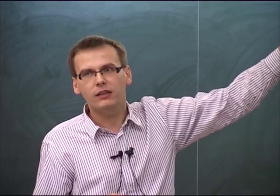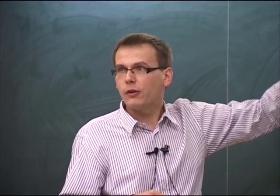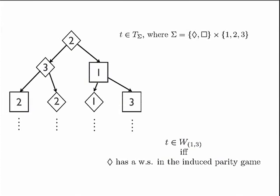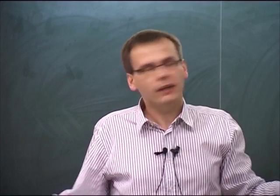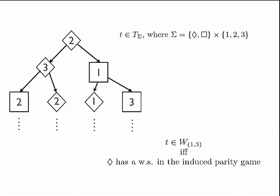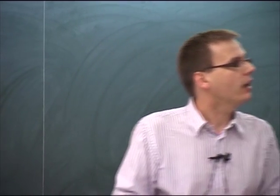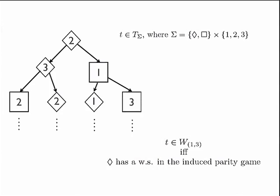On such a tree you can play the same game as in the automaton semantics: players start at the root; if it's a Diamond node, Diamond makes the choice of going left or right; if it's a Box node, Box chooses. This produces a sequence of numbers, and Diamond wins if the highest number seen infinitely often is even. It can be proved using a topological argument based on the Banach principle that such a language cannot be recognized by a [0,2] automaton.